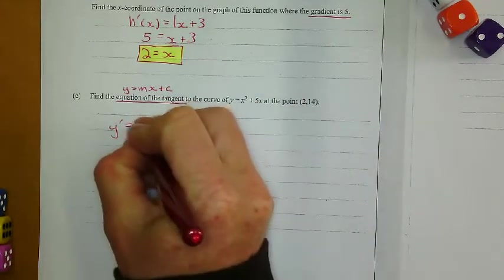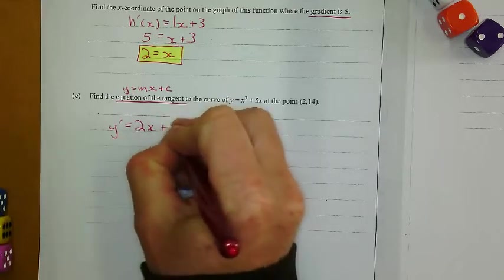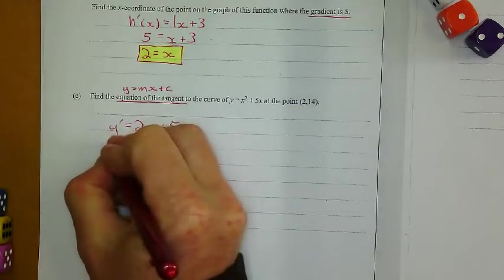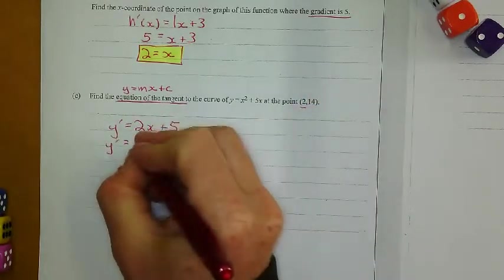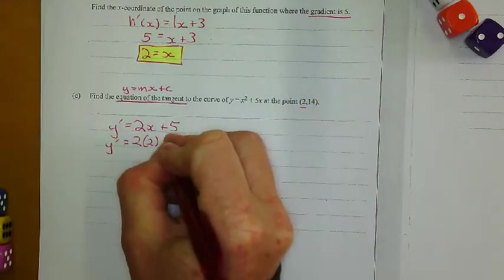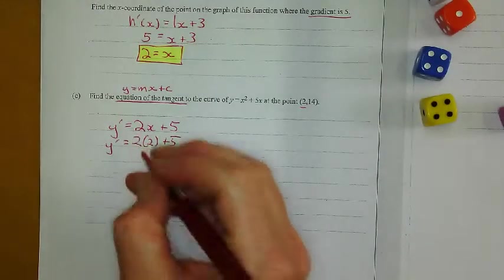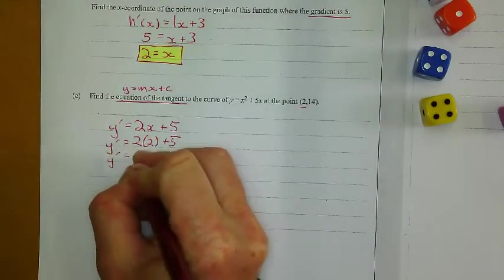Of course I get 2x plus 5. And I'm going to find the gradient at x equals 2. So I'm going to find the gradient when x equals 2, which is 2 times 2 plus 5. And I get a gradient of 9 for this one.